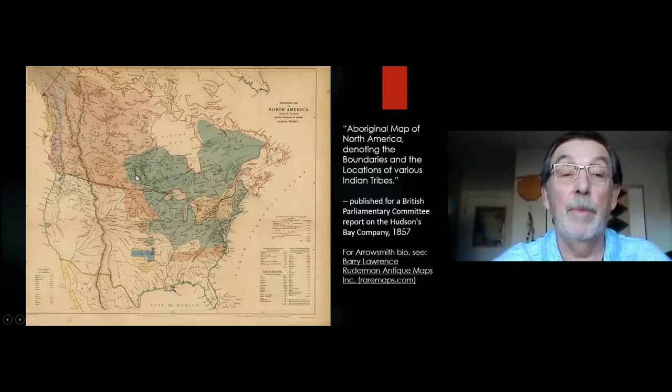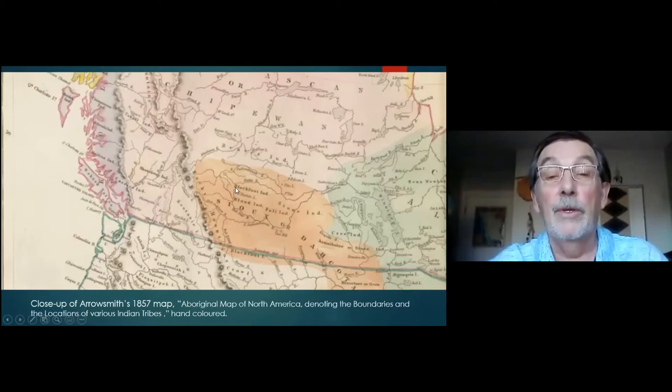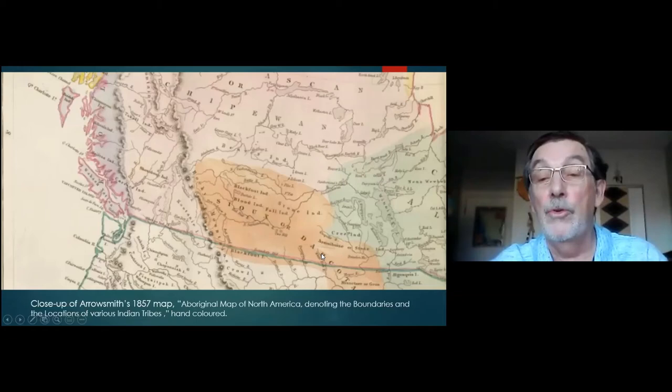I'm going to show you a close-up now, a part of the map that shows the names of some of the First Nations. The Blackfoot is seen here, along with the Blood and Fall Indians, all part of the Sioux or Dakota grouping.